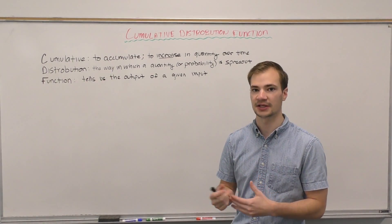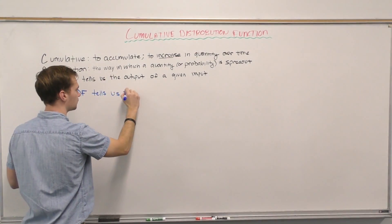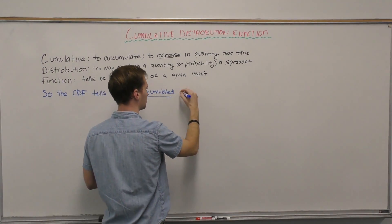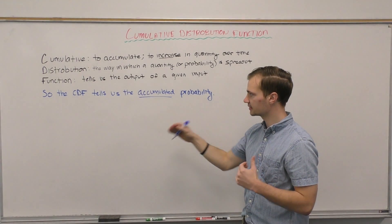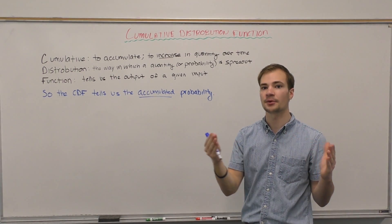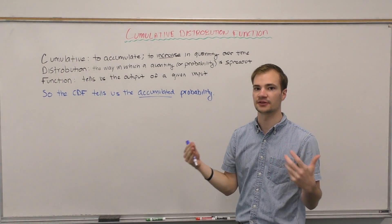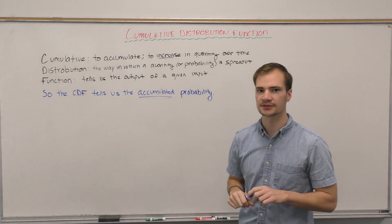In this case we're measuring probability. This might be a new concept for some of us. The CDF tells us the accumulated probability, so we're adding up all the probabilities until given X. So let's compare the difference between what the PDF tells us and what the CDF tells us.